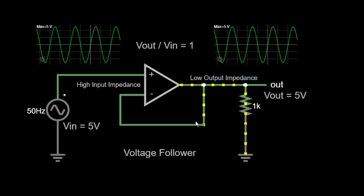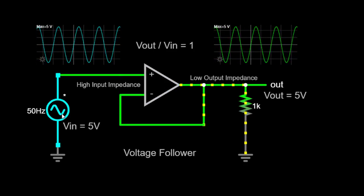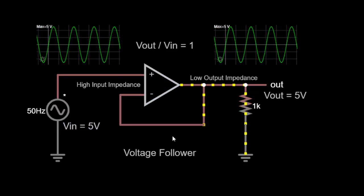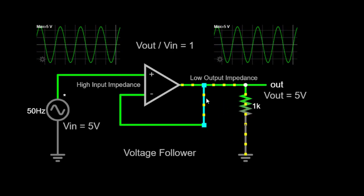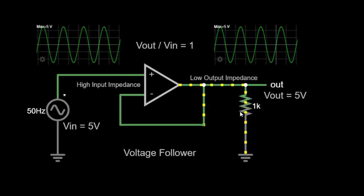The non-inverting terminal of the op-amp is connected to the input voltage source while the inverting terminal is connected to the output. The output is also connected to a feedback resistor that helps stabilize the circuit.